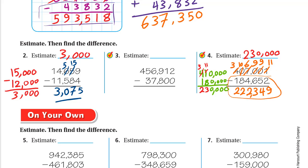Hope you guys enjoyed this lesson. The only difference between subtraction and addition estimation is that in subtraction we round to the digit before the last digit. Have a nice day, goodbye!